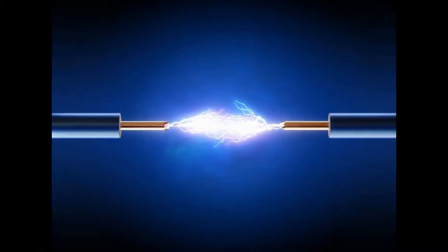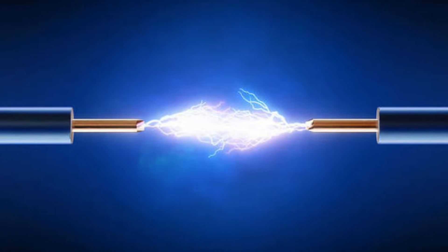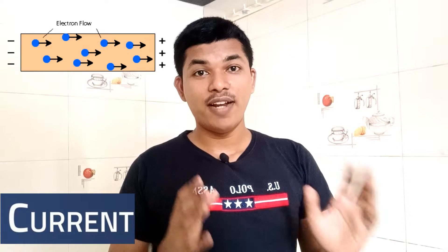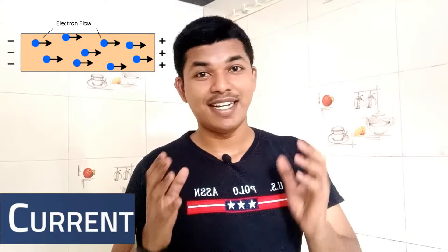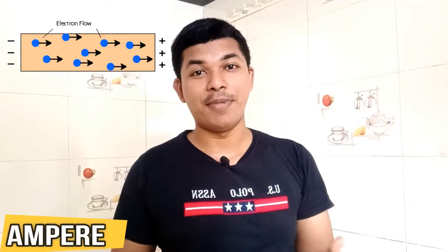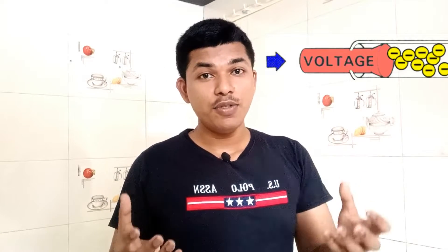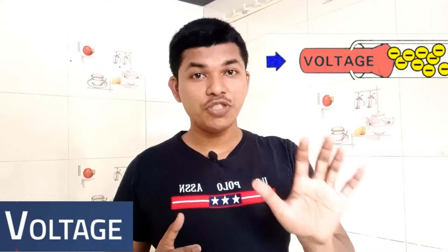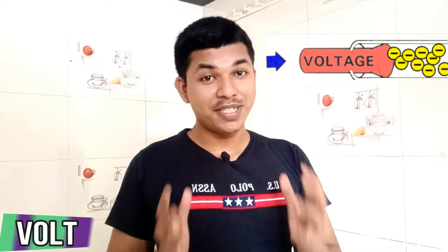Usually electricity needs a conducting material to pass through it. When electricity is passed through a wire, there will be a flow of electrons. This flow of electrons is known as current, and the unit to measure the current is ampere.